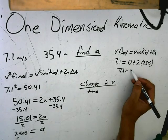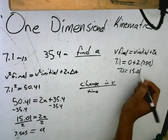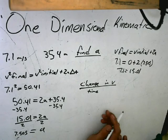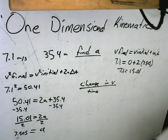So here we get a mistake. We wrote the wrong formula. It's really supposed to be v final equals v initial plus at, which is acceleration times time.